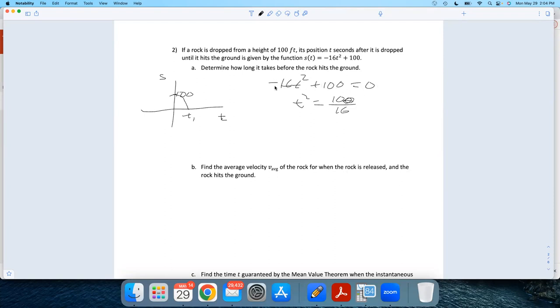I move the 100 over, then divide by negative 16, and my negative cancels. Take the square root of both sides - I don't need plus or minus here since I'm looking for a positive t value. I get 10 over 4, which is 2.5 seconds.